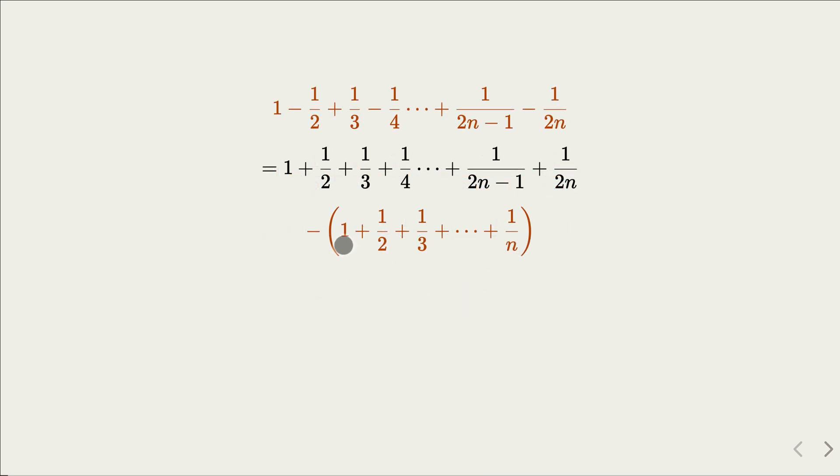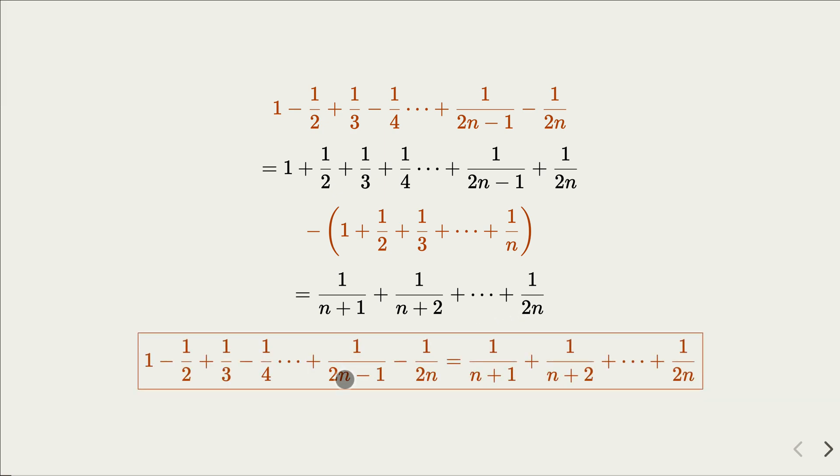So this becomes this. Now, you can cancel all the terms, right? Because here we have 2n terms, but you want to subtract the first n terms. What is remaining is exactly the right-hand side. So thus, we have proven the equality here.